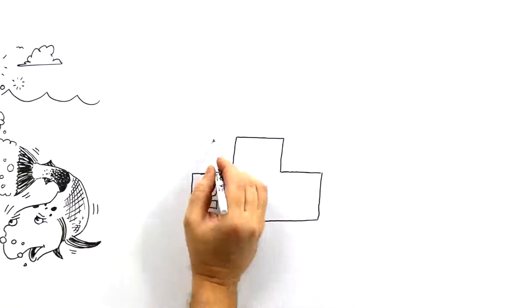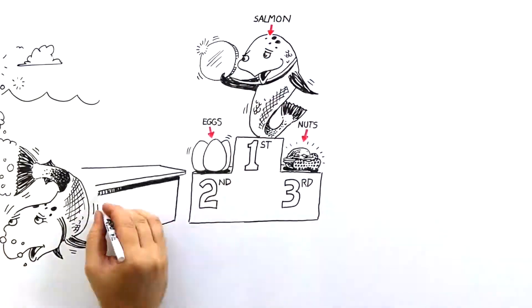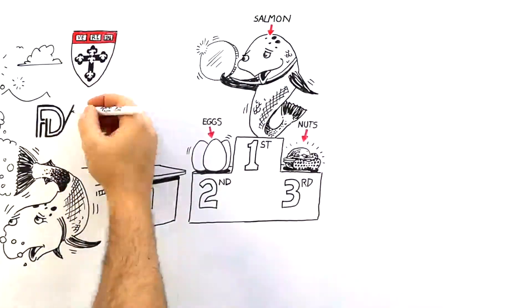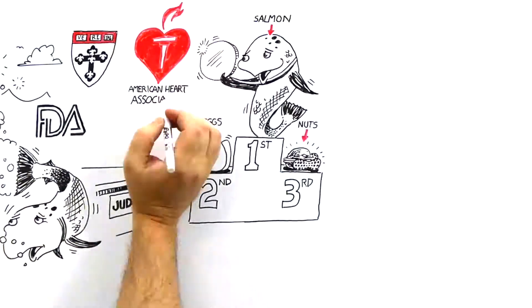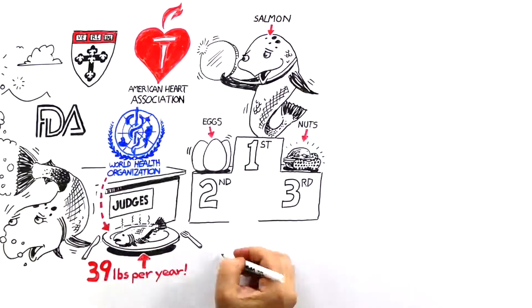Let's start with fish. Fish is the gold standard for getting your omega-3s. Health authorities around the globe believe you should eat at least one to two servings of fatty fish per week, which should average between 7 to 12 ounces, or about 39 pounds of fish per year.